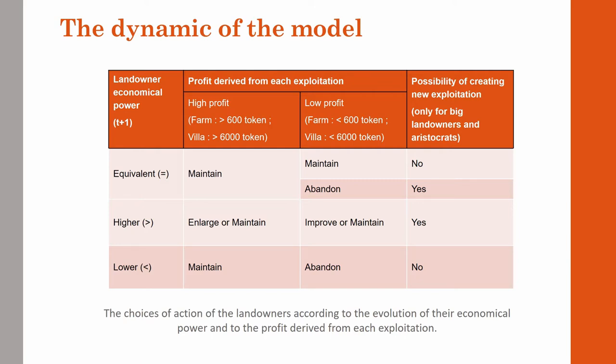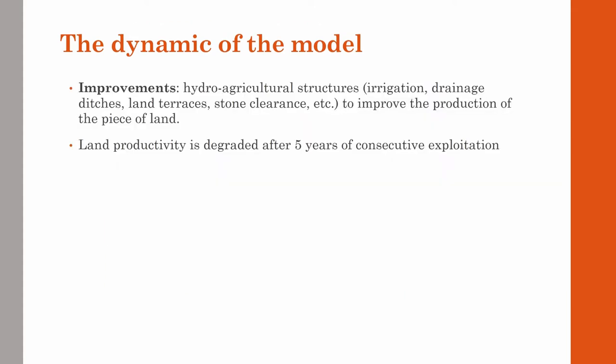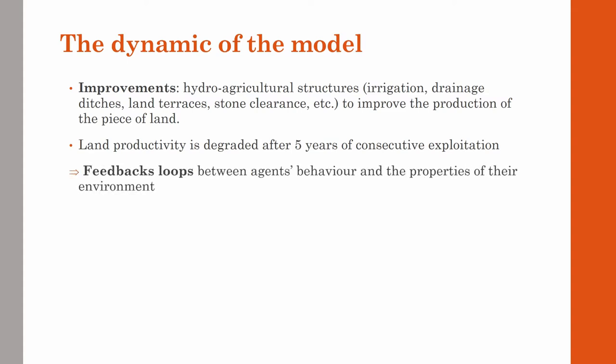When the landowner's revenue is superior, he can choose to maintain his exploitation without change or largely improve it. By improvements we mean various hydro-agricultural structures such as irrigation or drainage ditches, land terraces, and stone clearance, which can be laid out to improve the production of a piece of land. This creates feedbacks between agents' behavior and the properties of their environment as they can improve land productivity. Another feedback loop is introduced in the model by degrading land productivity after 5 years of consecutive exploitation.